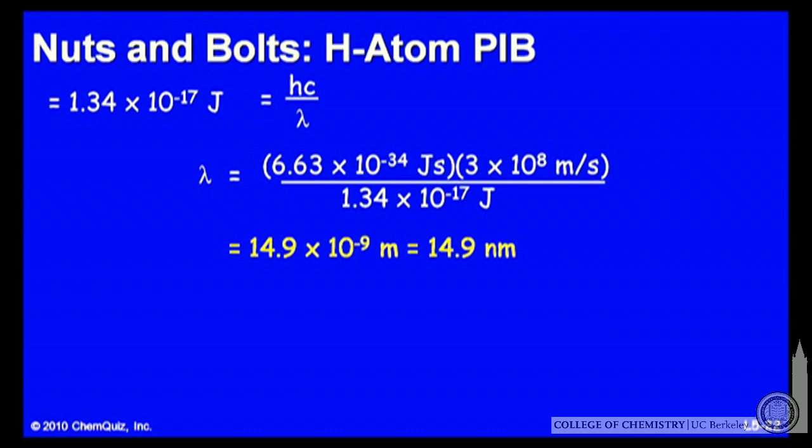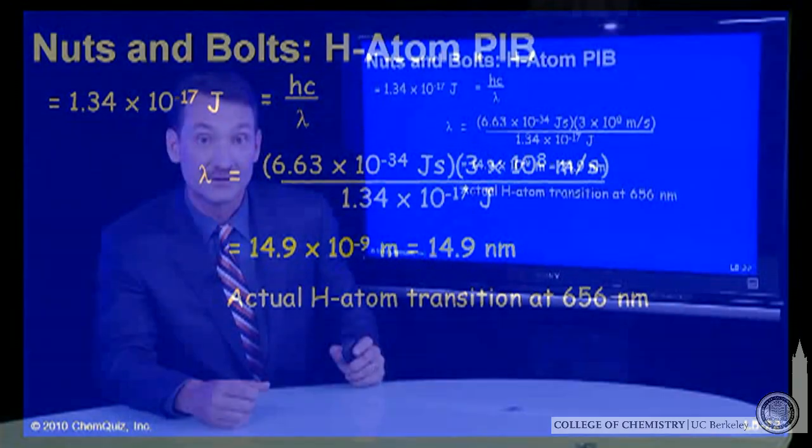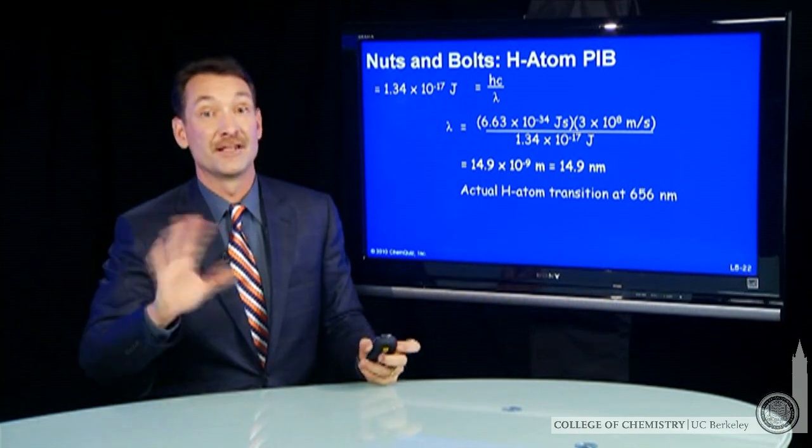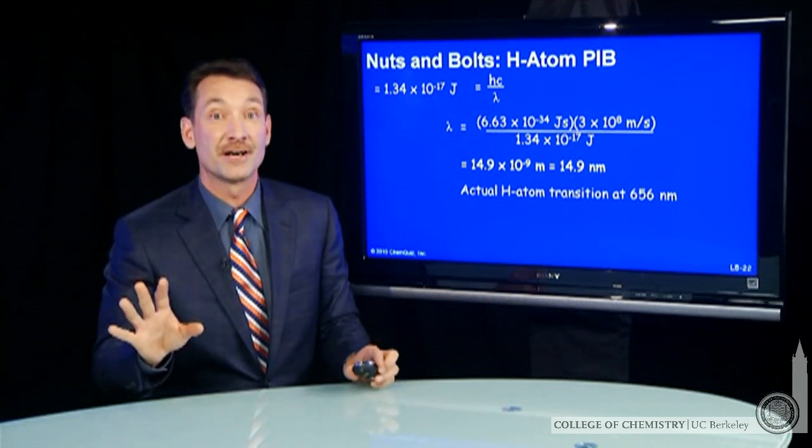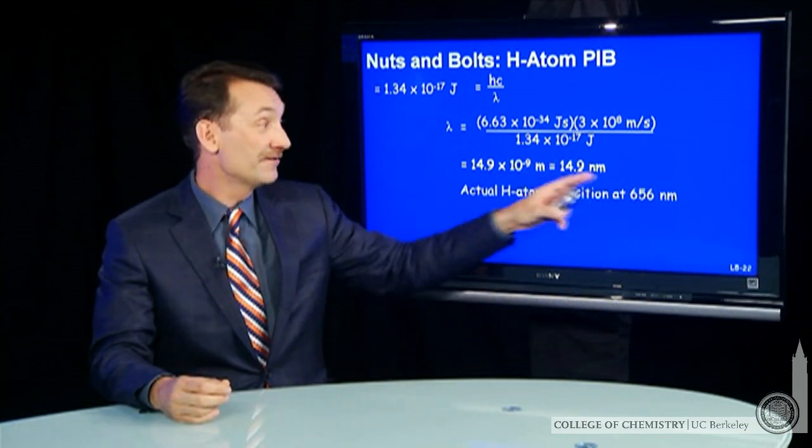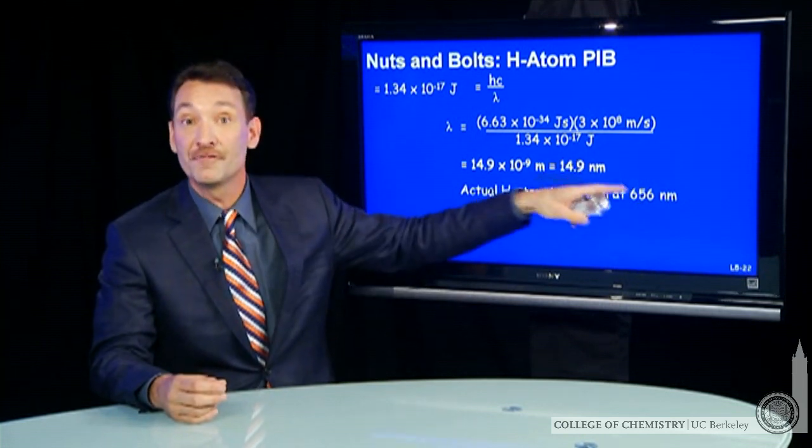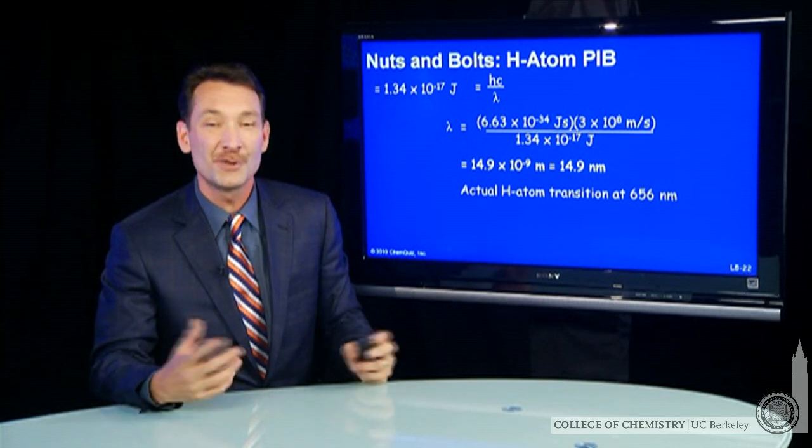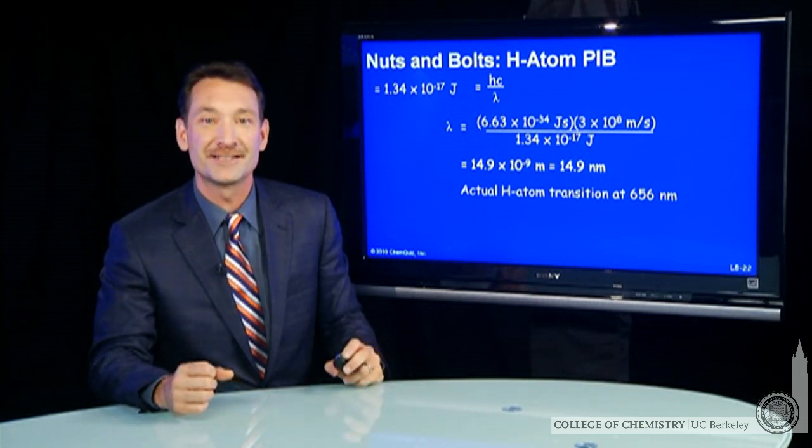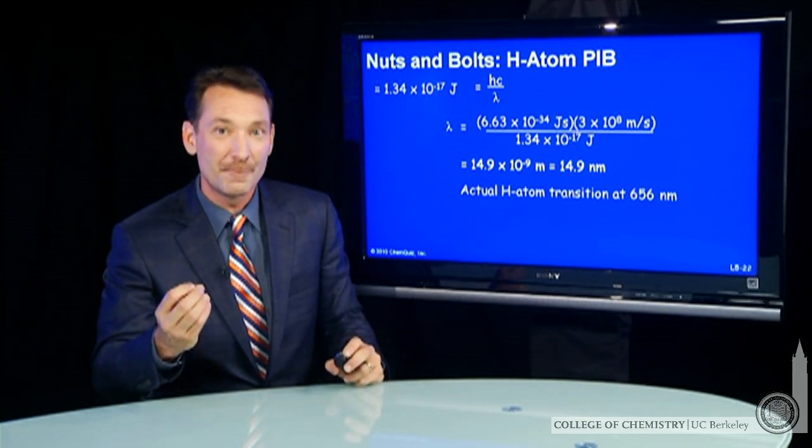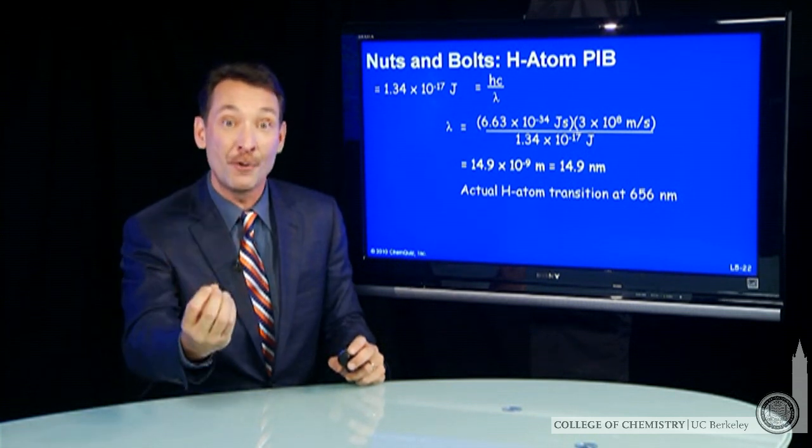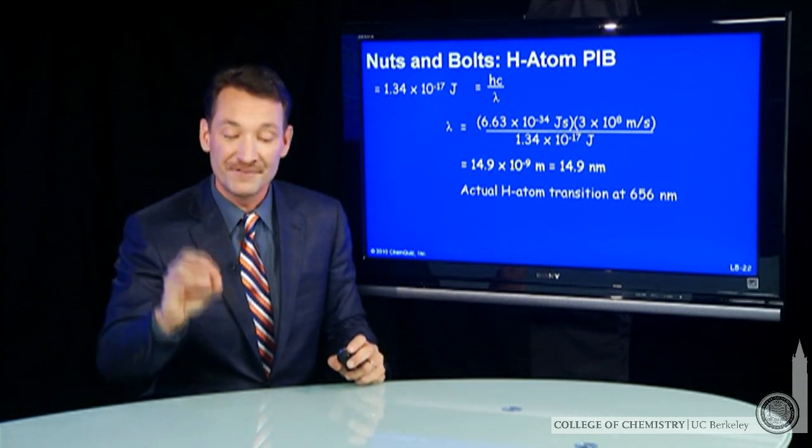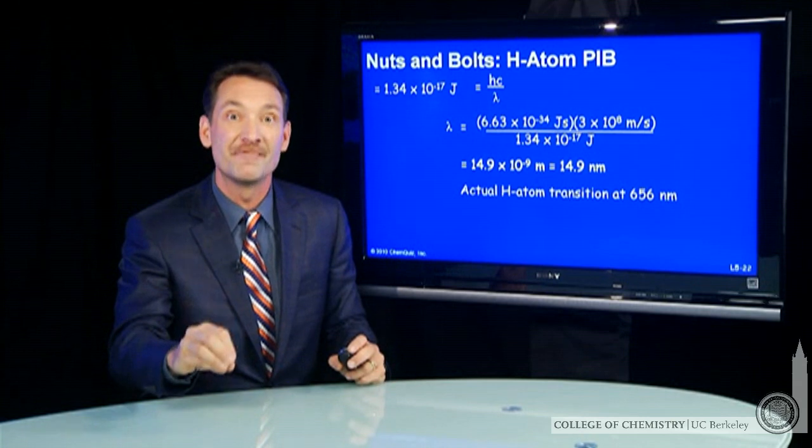It turns out for hydrogen atom, this transition is actually 656 nanometers. So this is a very hand-wavy approximate calculation, but you get kind of in the same ballpark, within a factor of one order of magnitude, a factor of about 10-ish of the wavelength, just doing a simple particle-in-the-box calculation. That's the beauty of quantum mechanics. It has a lot of power to express the very tiny properties of matter.